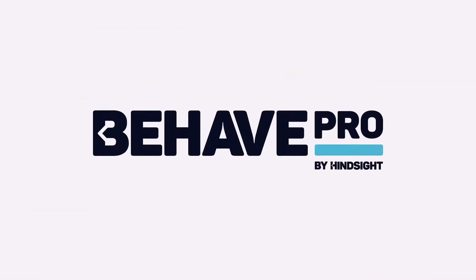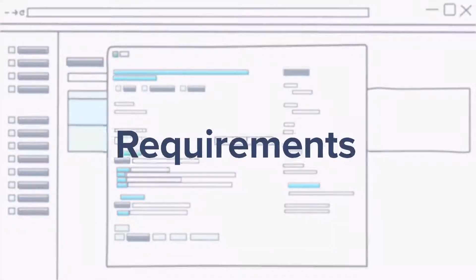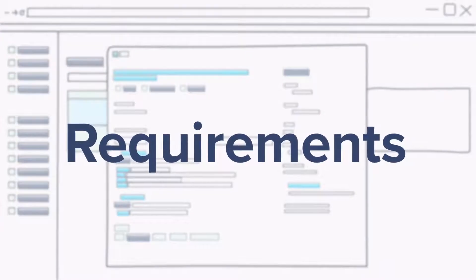All this can be avoided with Behave Pro. Using the power of behavior-driven development, Behave Pro brings requirements clarity to agile teams who use Jira.